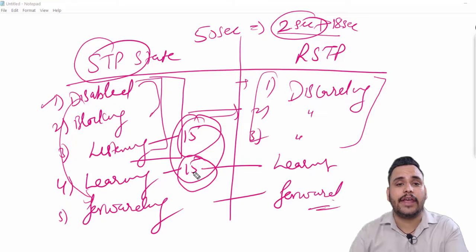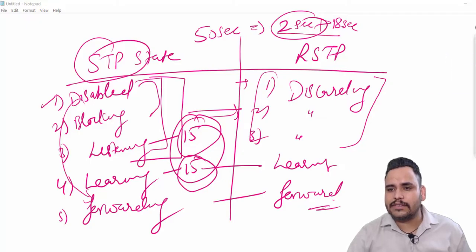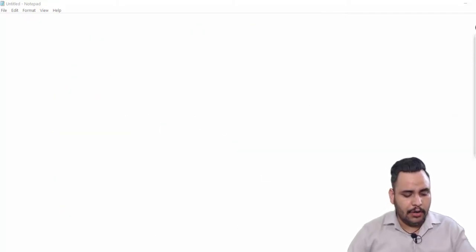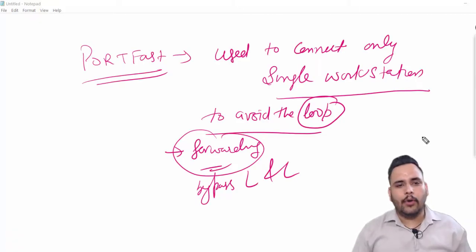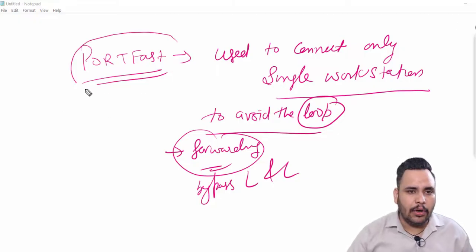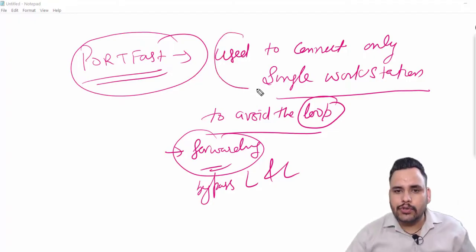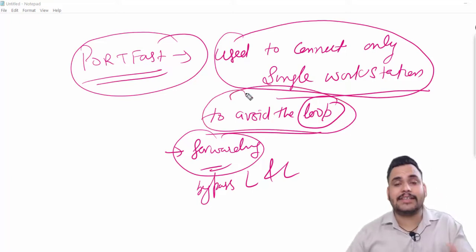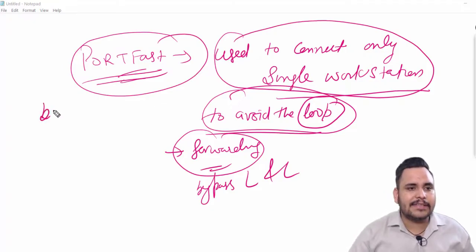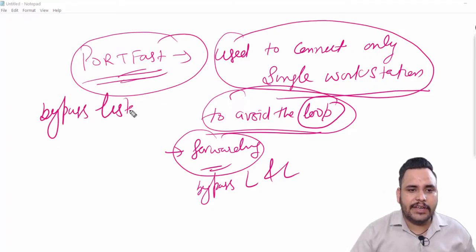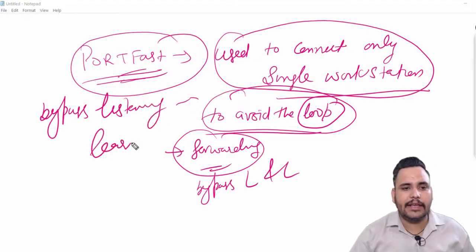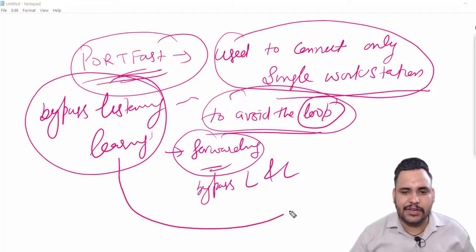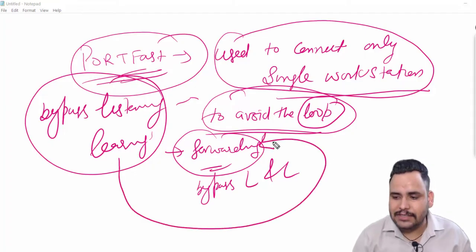After the states we need to know about one basic concept in Spanning Tree Protocol which is named port fast. Port fast is the key term used in our Spanning Tree Protocol. Basically port fast feature is used to connect only single workstations to avoid the loop. The benefit of port fast is it bypasses our listening state like 15 seconds and learning state, and automatically bypasses all the states into forwarding state. So port fast feature is used to bypass the listening and learning state in STP.